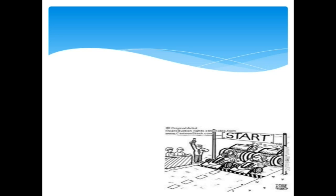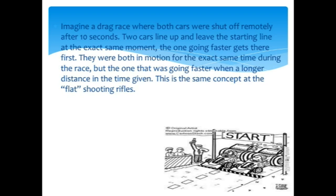Imagine a drag race where both cars were shot off remotely after 10 seconds. Two cars line up, leave the starting line at the exact same moment. One going faster gets further in that 10 second time period. So, if you have one moving at 100 miles an hour and another one moving at 200 miles an hour, and they both get 10 seconds to travel, the car going faster is going to cover essentially twice the distance. And I'm not getting into the logics of rates of acceleration.